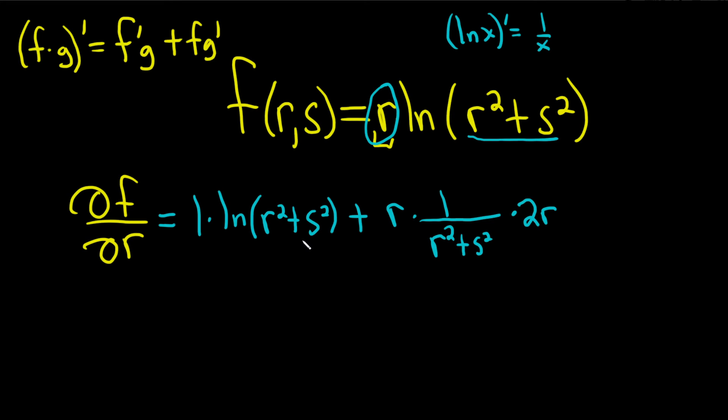Let's just check our work. So we did the derivative of the first, which is the derivative of r, which is 1, times the second plus the first, which is r. And then we took this derivative here.